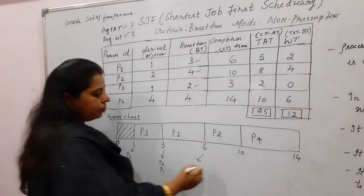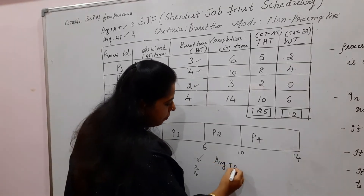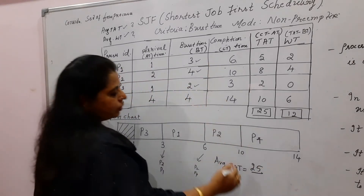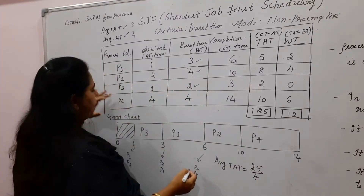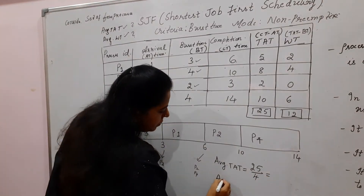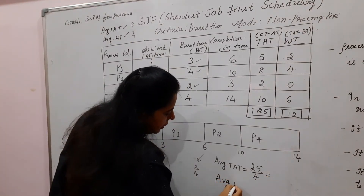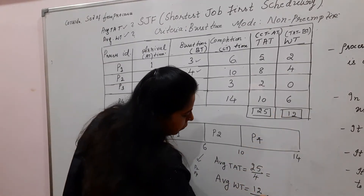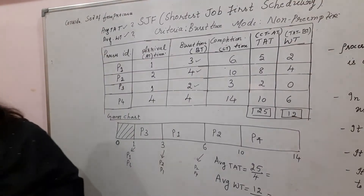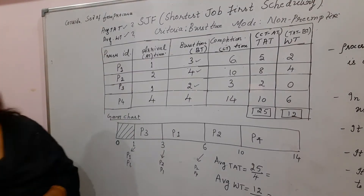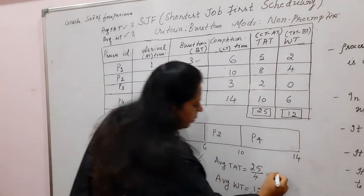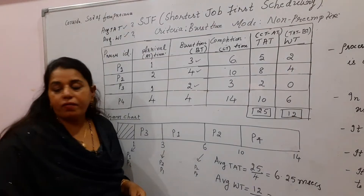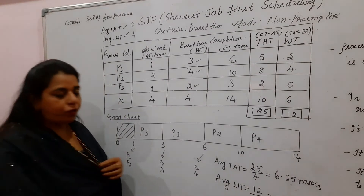Now find the average turnaround time: total turnaround time divided by the number of processes. We have 4 processes — P1, P2, P3, P4. Average turnaround time = 25/4 = 6.25 milliseconds. Average waiting time = total waiting time divided by number of processes = 12/4 = 3 milliseconds.